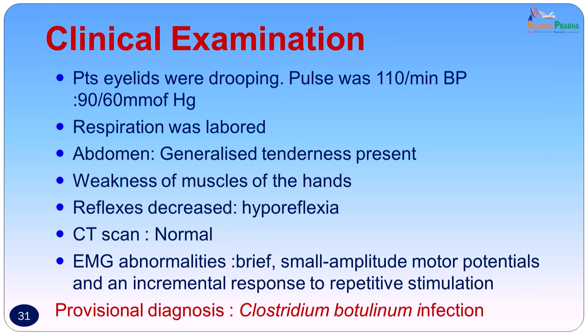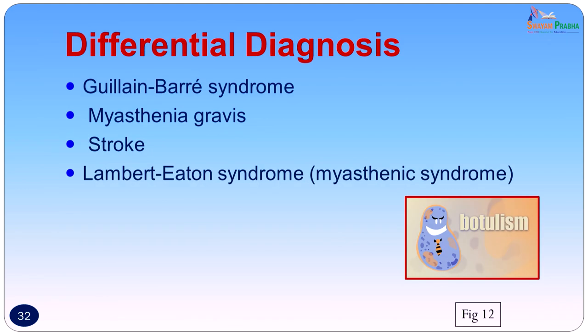Though the infection is not very common in the community, the fact that the patient had sausages from a can made the doctor suspicious of Clostridium botulinum infection. Since it is important to start treatment immediately, the decision was taken to treat in anticipation of laboratory confirmation. The differential diagnoses to keep in mind while diagnosing Clostridium botulinum infection include Guillain-Barré syndrome, Myasthenia Gravis, Stroke, and Lambert-Eaton syndrome, as the EMG picture is very characteristic of botulinum infection.